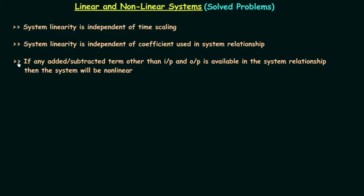Till now we have obtained three conclusions related to the linearity of the system. The third conclusion we obtained in the last lecture: if any added or subtracted term other than input and output is available in the system relationship, then the system will be non-linear. There are a few more conclusions — one we will obtain in this lecture and the rest in coming lectures — and by using these conclusions we can directly comment about the linearity of the system without checking the law of additivity and the law of homogeneity.